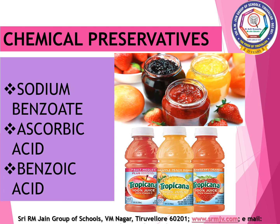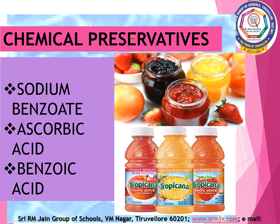We are going to see about the fifth method, that is chemical preservatives. A preservative is a substance or a chemical that is added to products such as food, paints, drugs and many other products to prevent microbial growth. Chemical preservation is the addition of chemical compounds or preservatives like sodium benzoate, ascorbic acid and benzoic acid. Fruit juices, jams and jellies, and ketchup are preserved by this method.